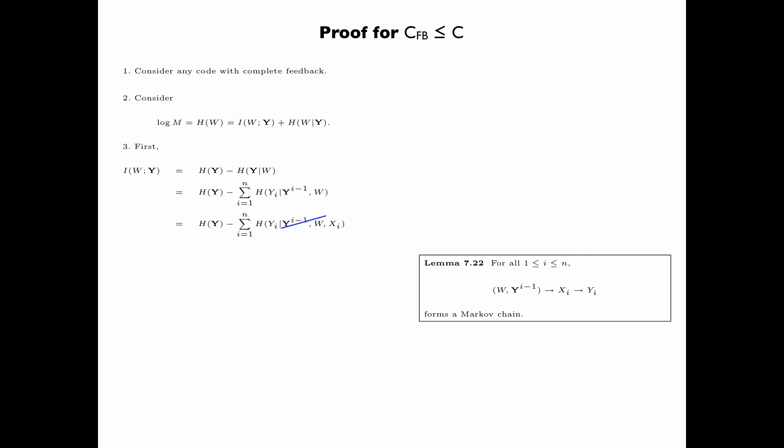We have H(Y) minus summation i equals 1 up to n, H(Y_i|X_i). By the independence bound, H(Y) is upper bounded by summation i equals 1 up to n, H(Y_i). Now, combining H(Y_i) and minus H(Y_i|X_i), we have I(X_i;Y_i), the mutual information between the input and the output of the channel at time i. And by the definition of C, each of these mutual informations is less than or equal to C. And so, we obtain the upper bound nc.